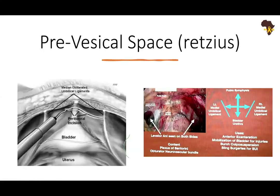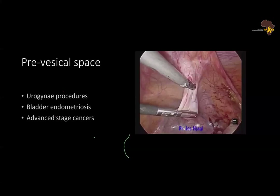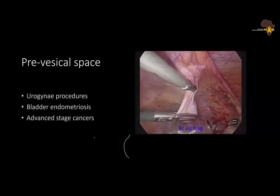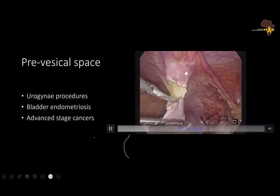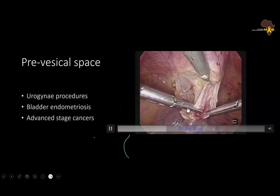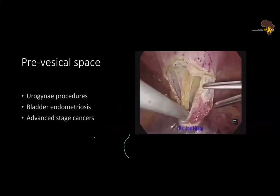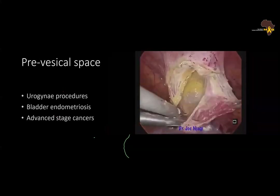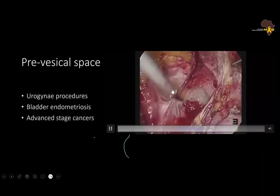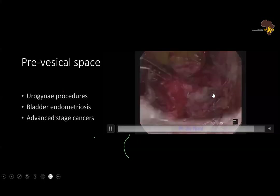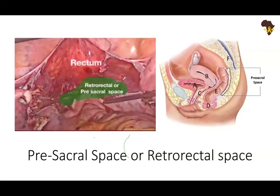The prevesical space — the space of Retzius — is rarely used in endometriosis unless you have a bladder endometriotic nodule; otherwise it is used in urogyne procedures and advanced-stage cancers. It is approached between the two obliterated umbilical arteries. When you open this peritoneum and encounter fat — do not dissect into the fat. Push it down, because the fat belongs to the bladder. Once you have pushed it down with all the fat, you will now see this space used to free the bladder, excise a nodule and repair it, or for urogynecological procedures.